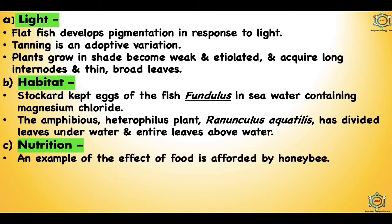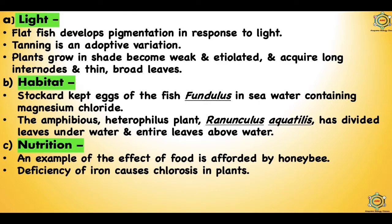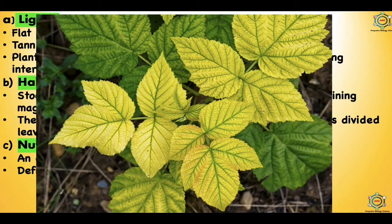Next is nutrition. An example of the effect of food is afforded by the honey bee. A larva fed on bee bread (pollen mixed with a little honey) grows into a sterile female worker, while a larva fed on royal jelly (a secretion from the mouths of nursing workers) grows into a fertile female queen. Deficiency of iron causes chlorosis, meaning lack of chlorophyll, in plants.